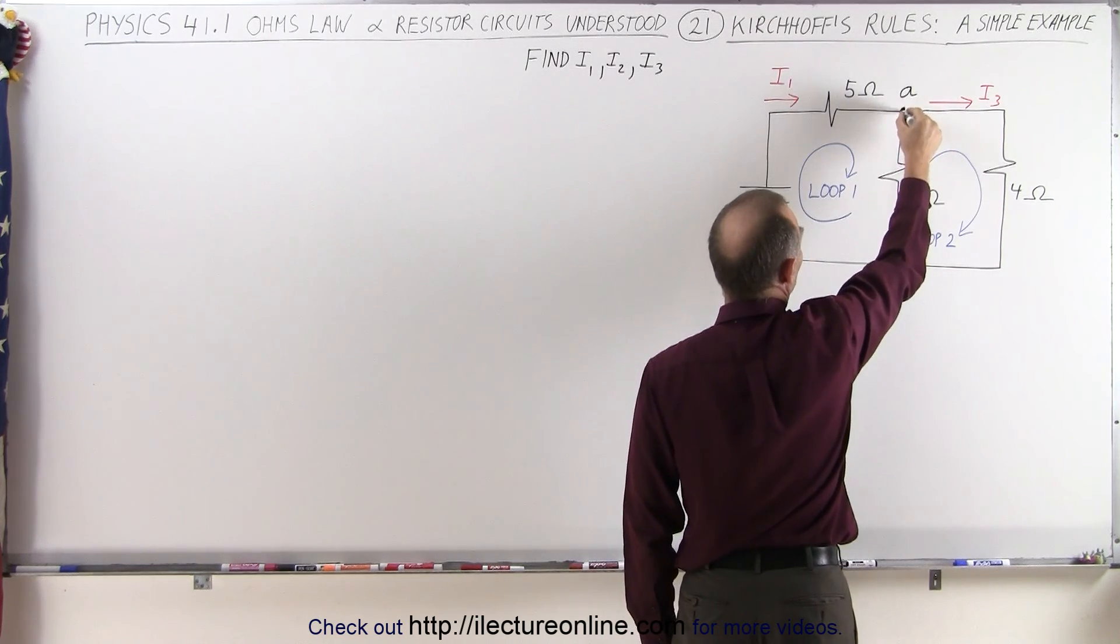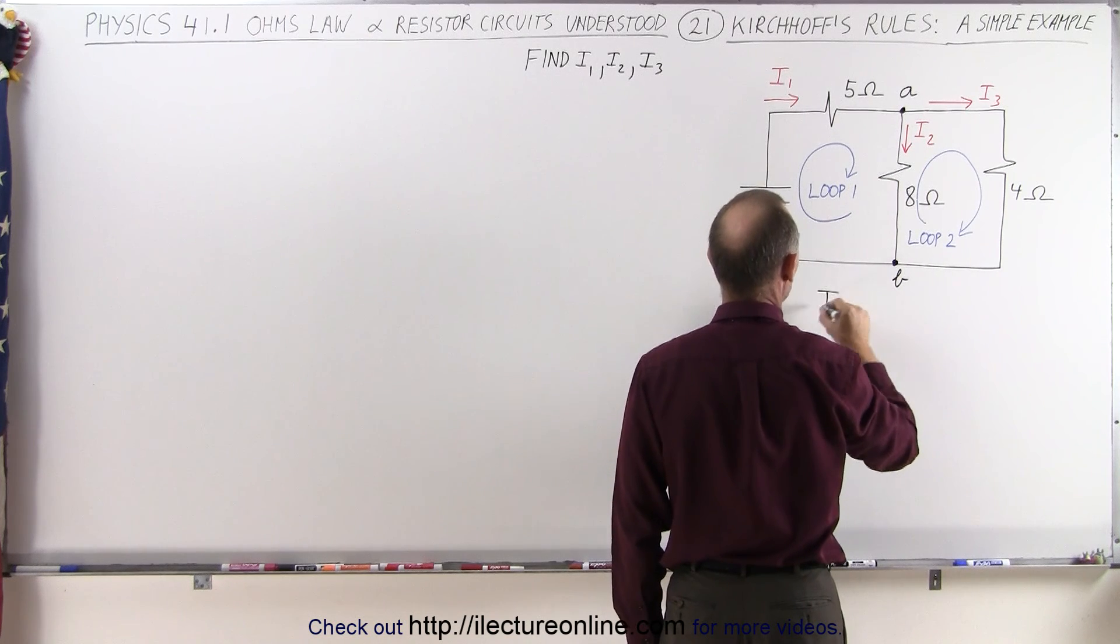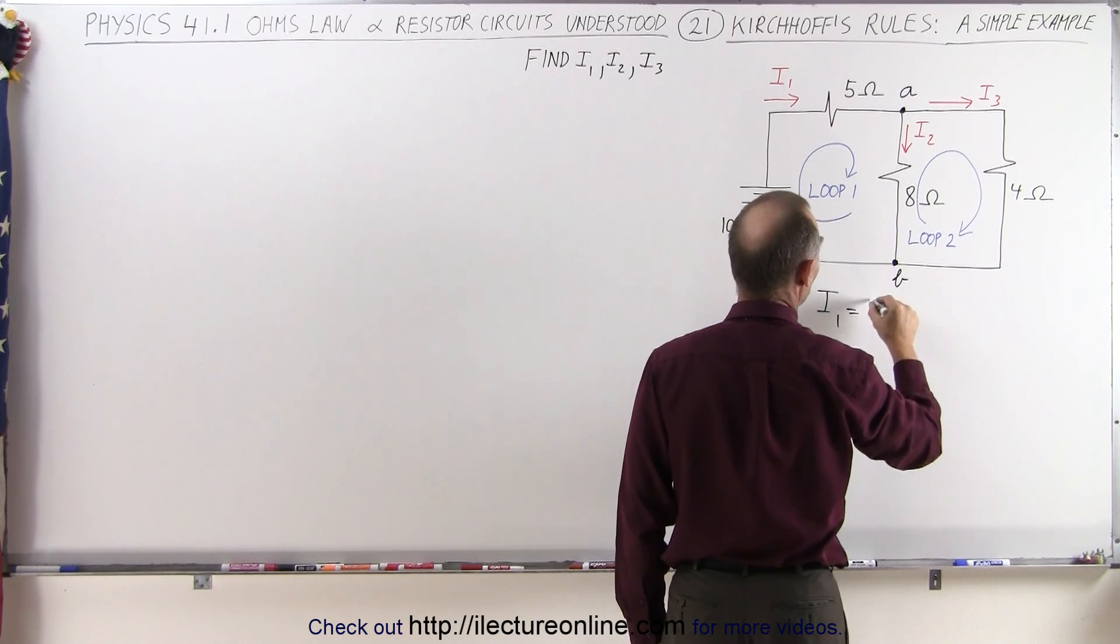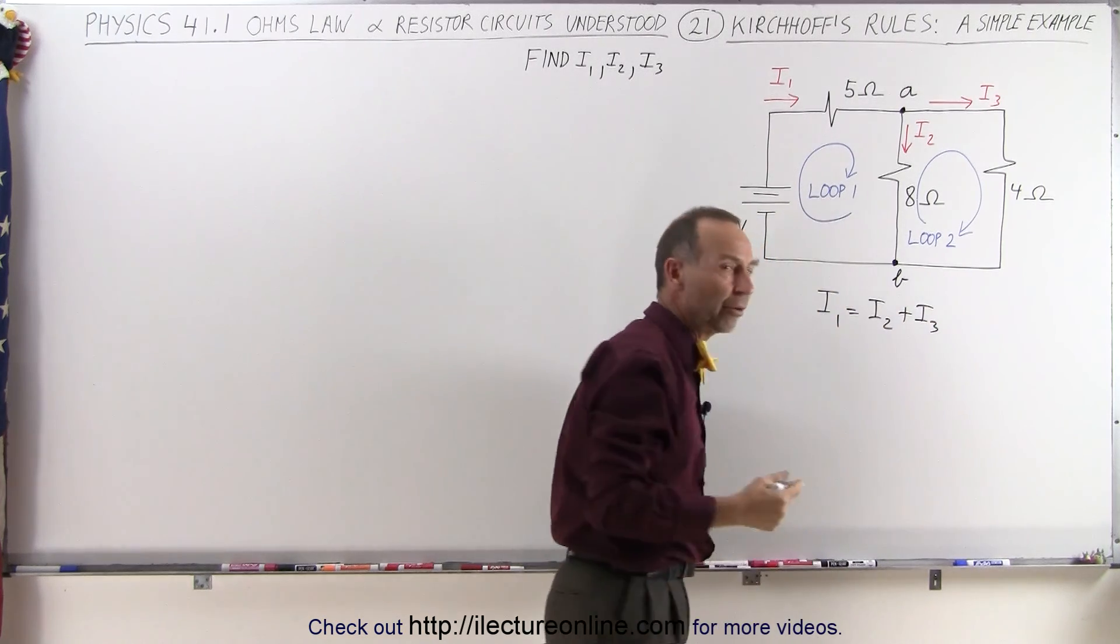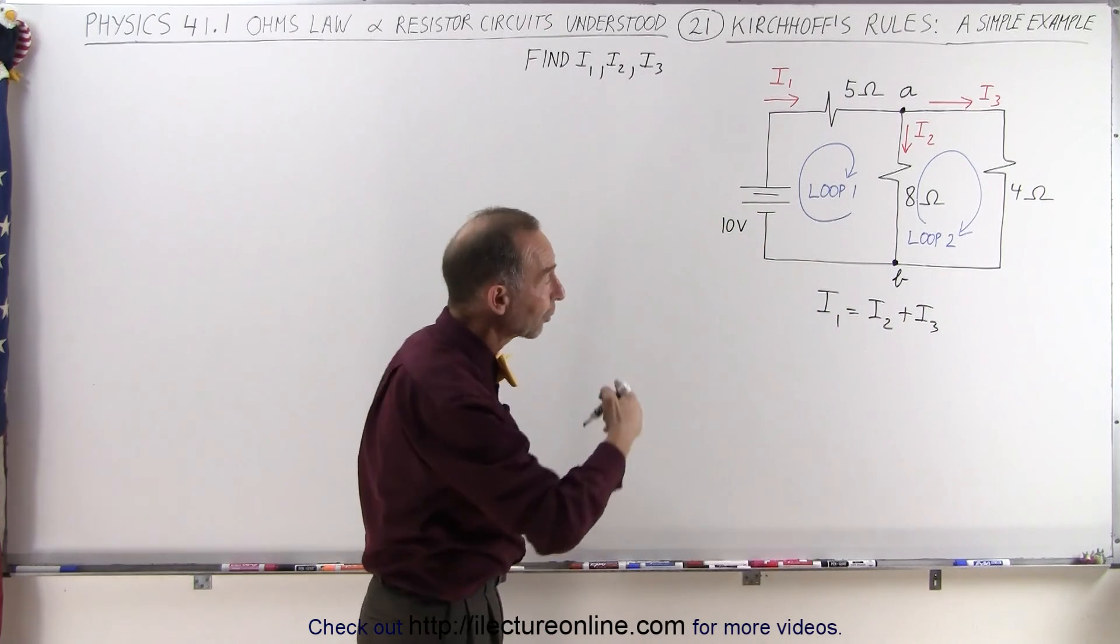In this case, if we pick branch point A, we can say that I1 is equal to I2 plus I3, which is our first of our three equations to find the three unknowns.